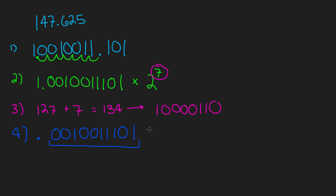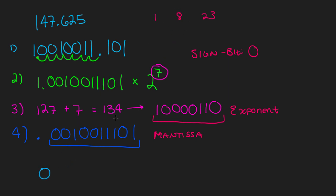So we have the mantissa and the exponent identified. The sign bit you can determine just by looking at it — is 147.625 negative? No, so the sign bit is simply zero. Now let's combine everything. The structure is 1-8-23 bits. Sign bit is zero, and the exponent is 10000110 — that's eight bits, perfect.